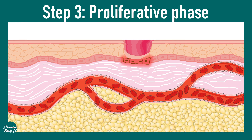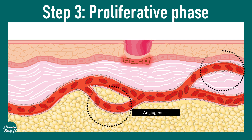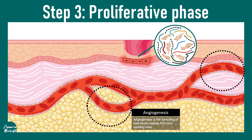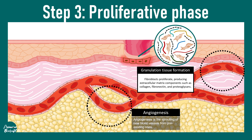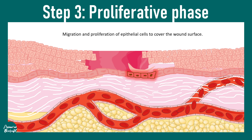The third step of the wound healing process is the proliferation phase. At this phase, angiogenesis picks up and several blood vessels form underneath the injury site, supplying more oxygen to this region. There is also a granulation phase where fibroblasts proliferate and produce extracellular matrix components such as collagen, fibronectin, and proteoglycans.